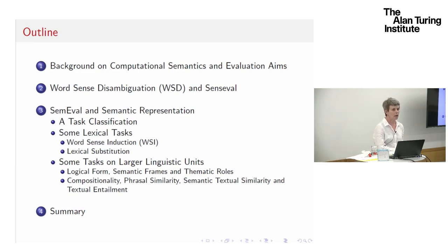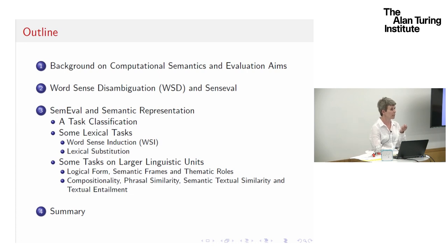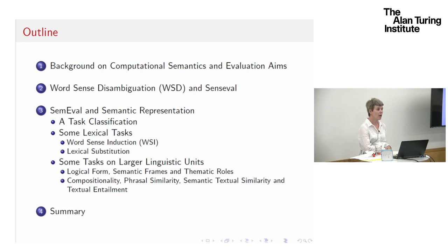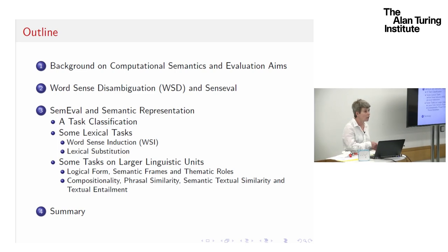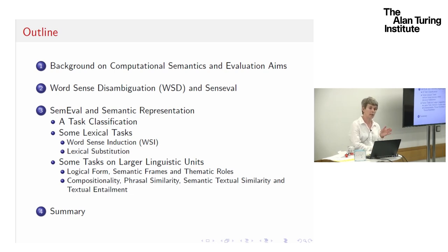The task started firmly in a field called word sense disambiguation. Words have multiple meanings, and the idea is that a computational system should associate the right meaning with the right context, so it knows what the speaker is referring to at any given point. The series very firmly started with these word sense disambiguation tasks, but subsequently it's blossomed into a wide variety of different tasks. I'm going to give a classification of whether tasks require a specific representation of semantics or whether they're completely agnostic about that representation.